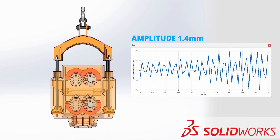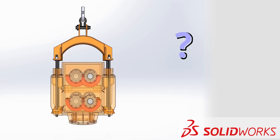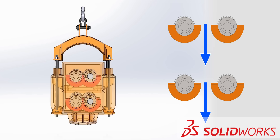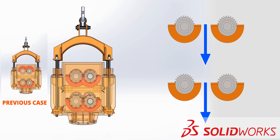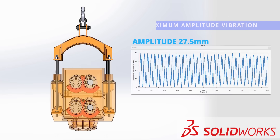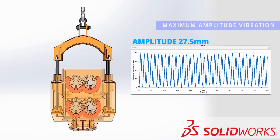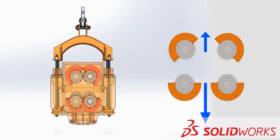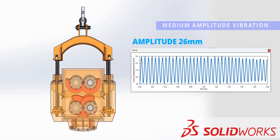This is confirmed by the SOLIDWORKS motion study as well. What will happen if the top pair is in a different phase angle — a 180-degree angle difference compared to the previous case? Obviously, here both the vibrations will get added up, and the amplitude of the vibration will be the maximum. Now let's consider the third case. Here, the top pair is between the angles of the first two cases. The force analysis shows that the oscillating force is half the amplitude of the first case, meaning the amplitude of vibration will have a medium value.